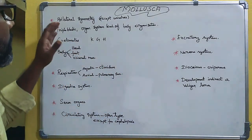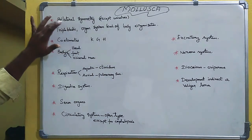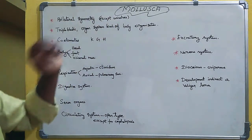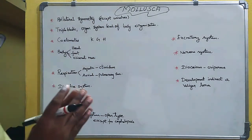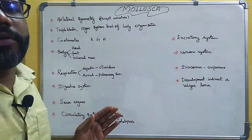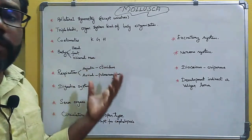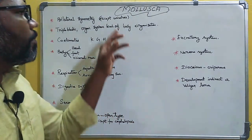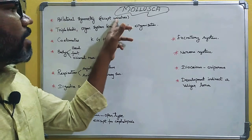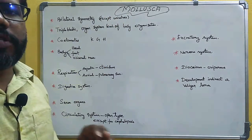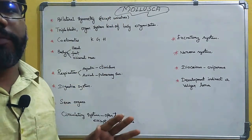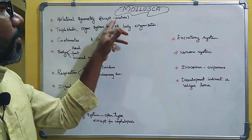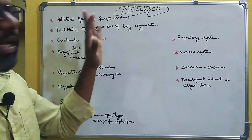Mollusca are usually bilaterally symmetrical, except univalves. For example, cephalopods are bilateral. But univalves — for example, gastropods — are not. So bilateral symmetry is present except in gastropods (univalves).